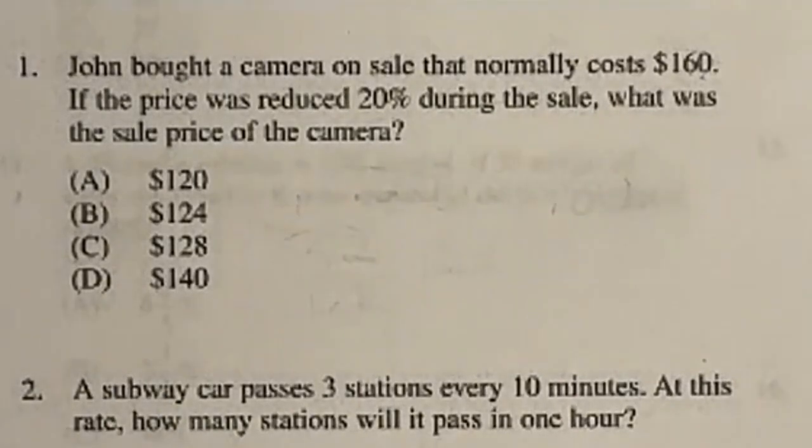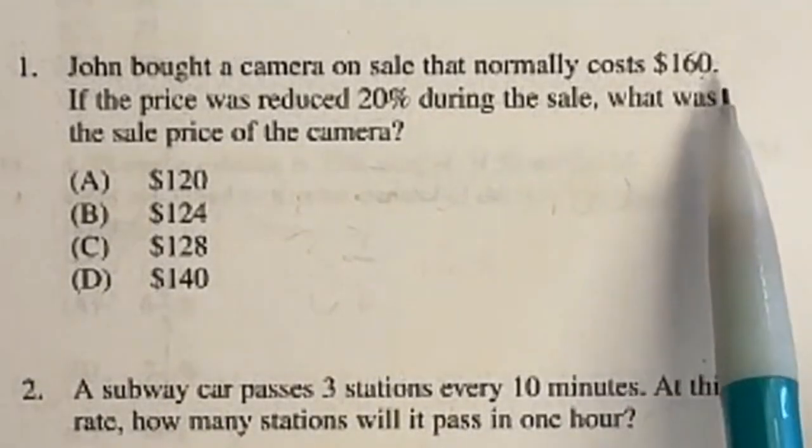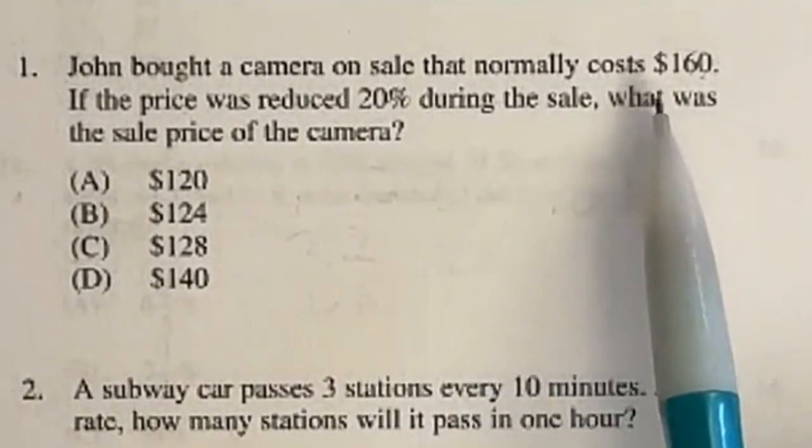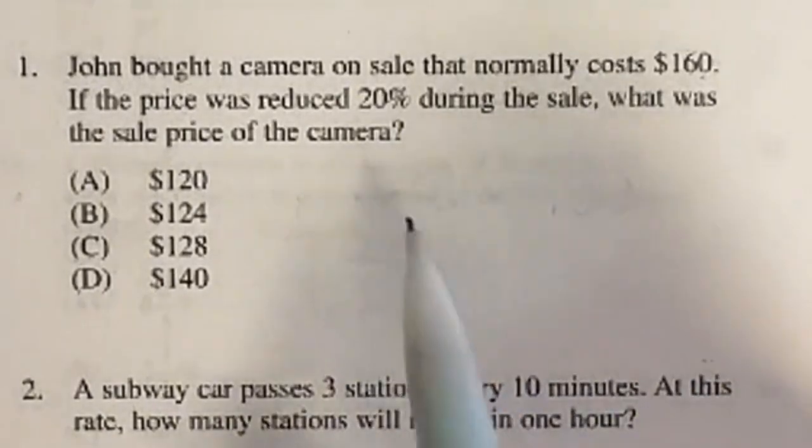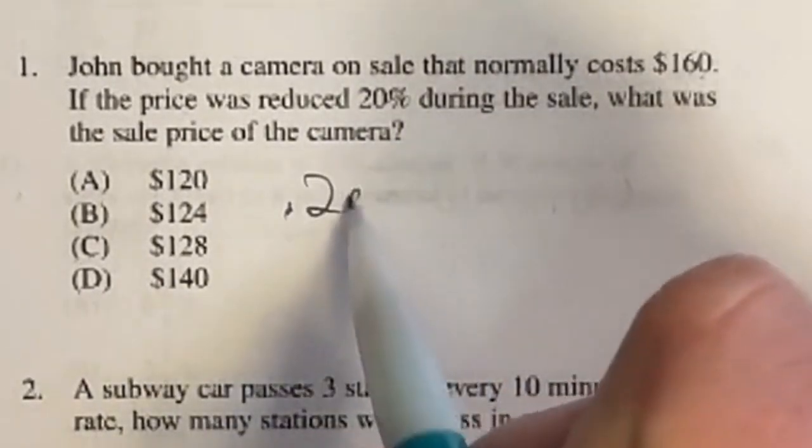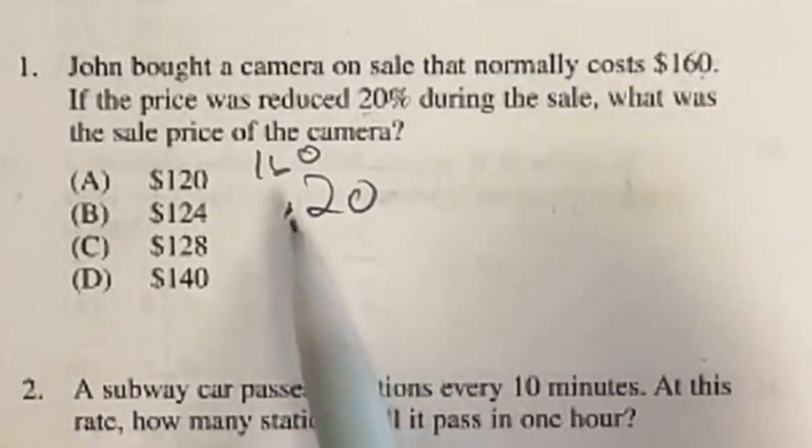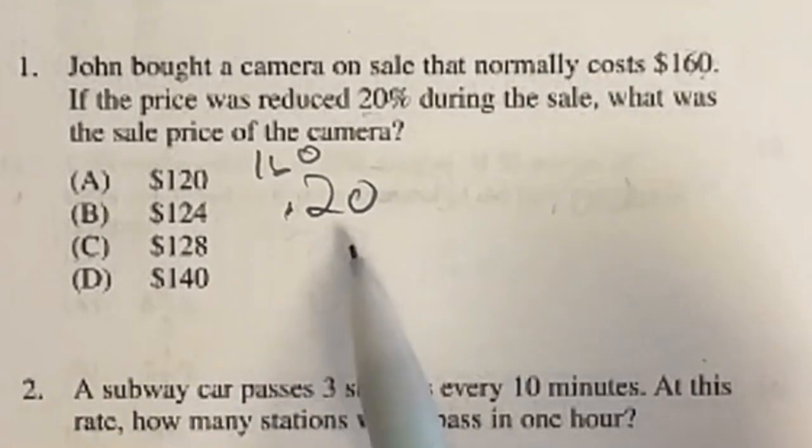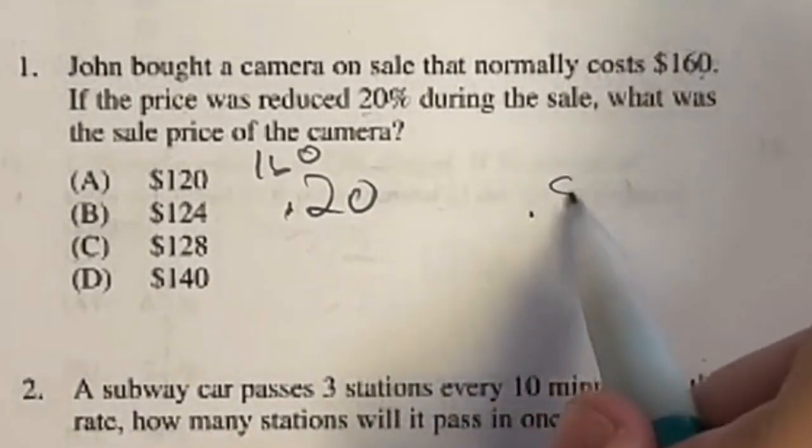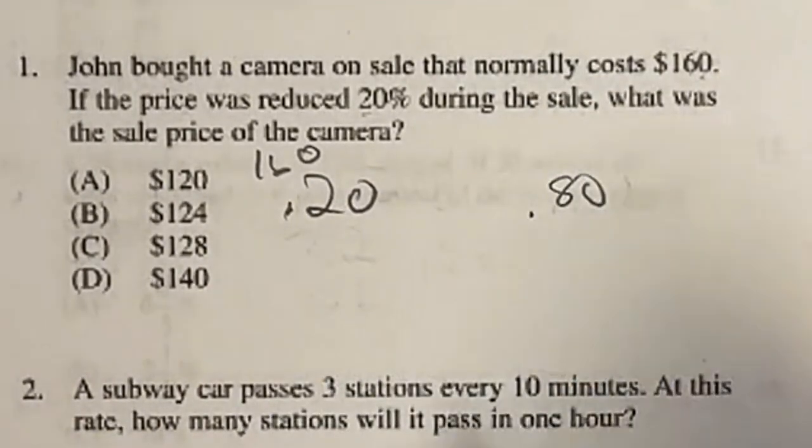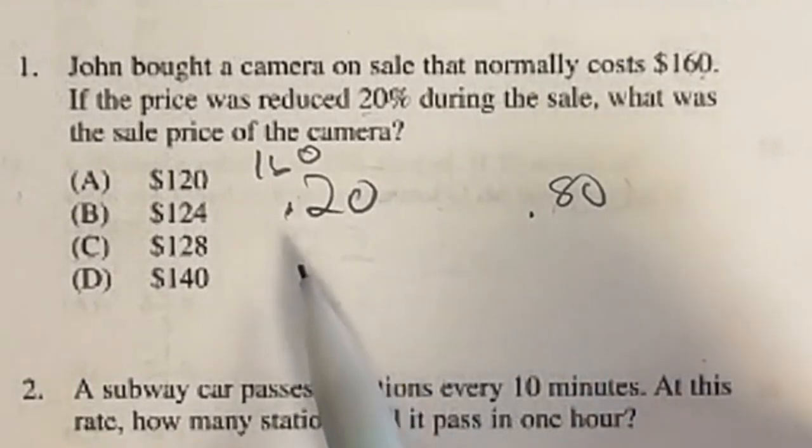There are two ways you can do this question on the ASVAB. You have $160, you're taking 20% off, and we're finding the new price. I could either take 0.20, the decimal form of this percent, and multiply it by the 160 to find the discount, and then subtract that from the 160 to get my final answer. Or I could do 0.80 times the 160, and that would give me the answer right off. This is easier for me to do in my head.